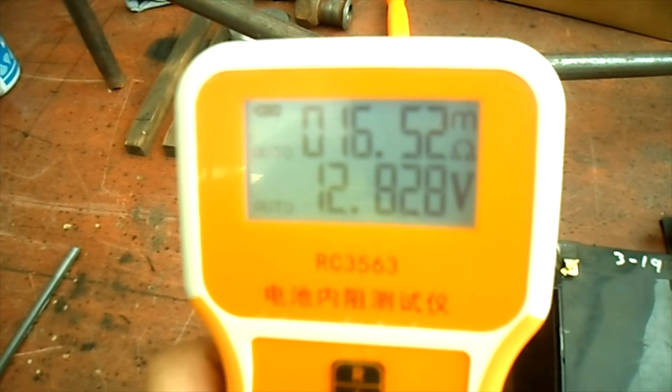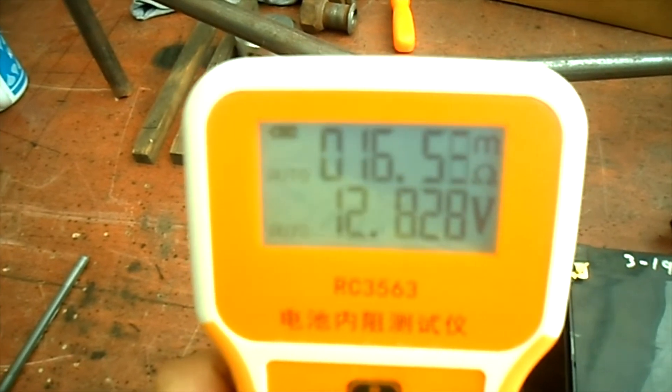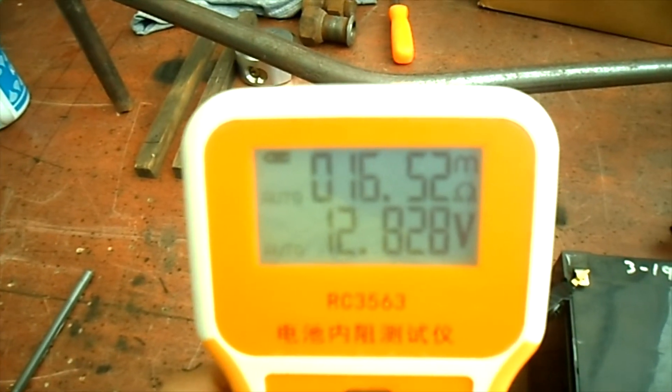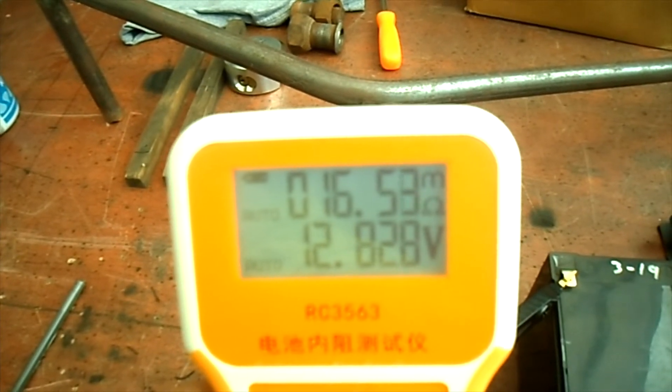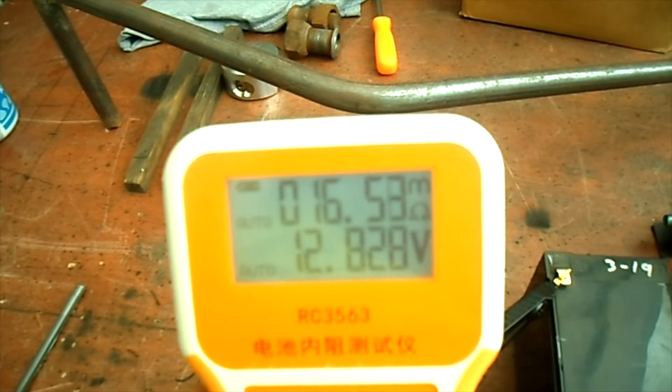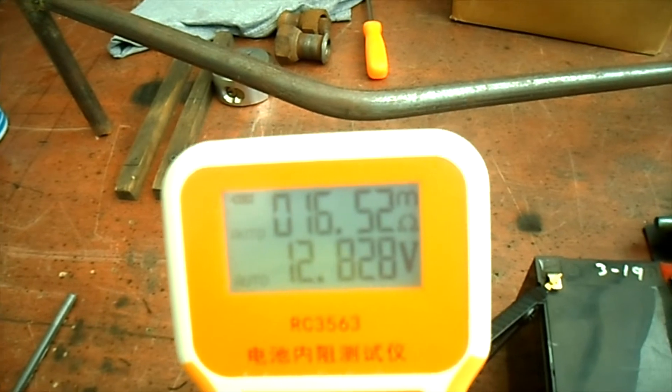It's showing 12.828 volts and the ohms is coming in at 16.52, 5.3, 5.9, 5.8, but 16.5.